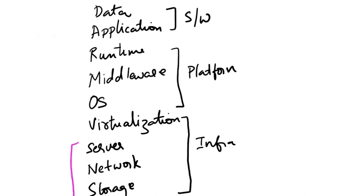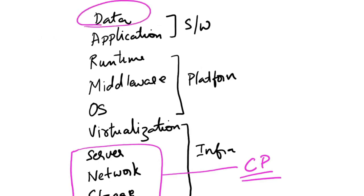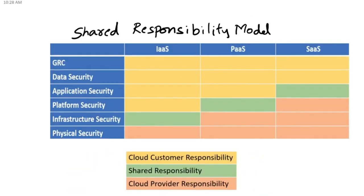What we understand from this is that the physical part is always the responsibility of the cloud service provider. The data is ultimately the responsibility of the cloud consumer. Looking at the shared responsibility model, all the yellow part represents cloud consumer responsibility. In infrastructure as a service, all GRC, data, application security, and platform security is the responsibility of the cloud consumer. The infrastructure part in IaaS is the shared responsibility of both cloud consumer and cloud provider. These ambiguous shared areas are where the risk is the highest because both parties are responsible for them.